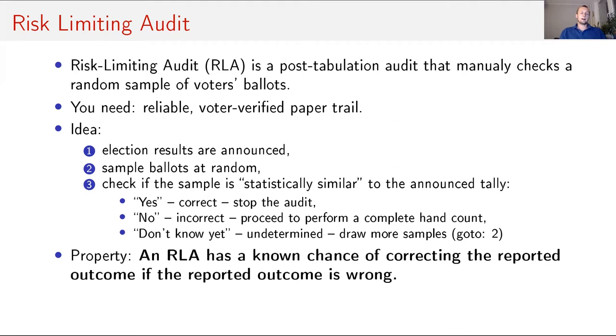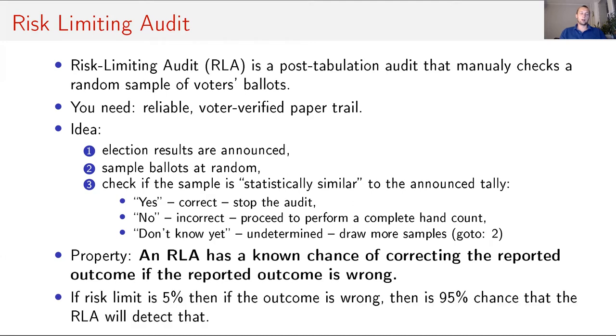Risk limiting audits have a very nice property. An RLA has a known chance of correcting the reported outcome if the reported outcome is wrong. So if you set risk limit to 5%, then if outcome is wrong, then there is a 95% chance that the RLA will detect that.